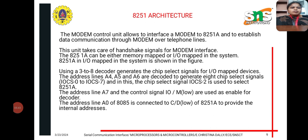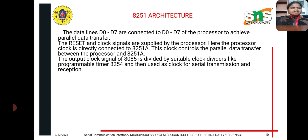The function of modem control uses a 3-to-8 decoder which generates chip select signals, and address A0 is connected to provide the internal address. Handshaking signals are also handled in the modem interface. Data lines achieve the data transfer, with signals supplied by the processor. The output signal is divided with a programmable timer, used for serial transmission and reception.